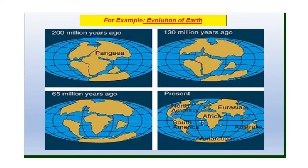On the Earth's surface, changes are still taking place because forces inside the Earth are continuously working and affecting the Earth's surface. But we are not able to see this because it is really very, very slow. I believe evolution is clear to everybody.